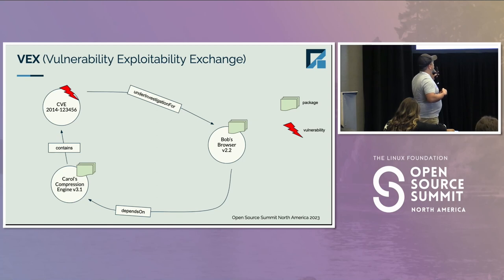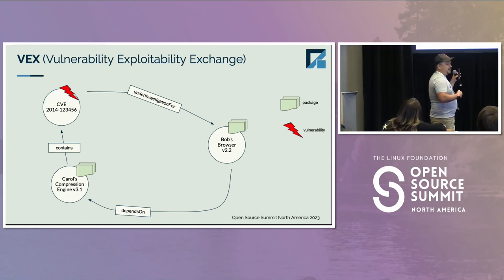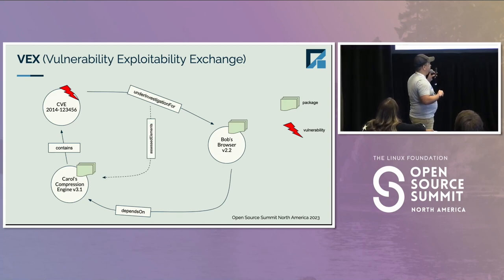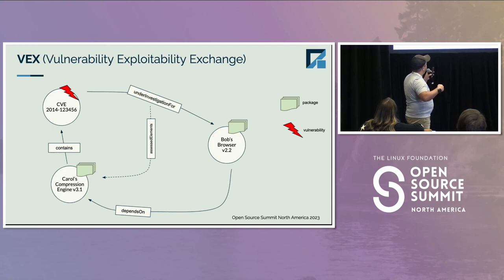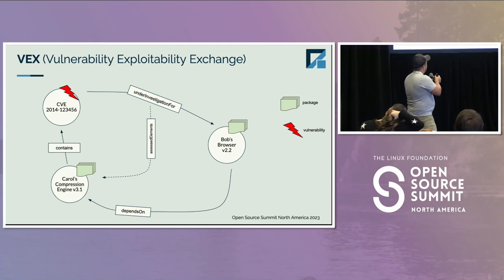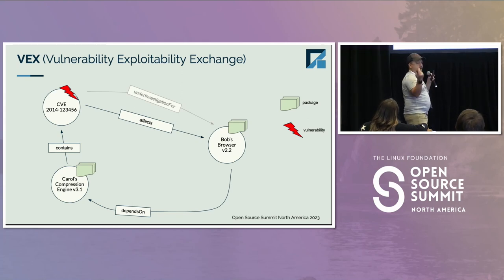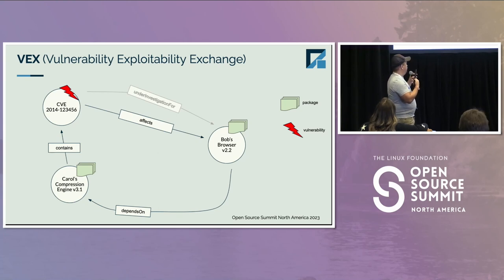Once the CVE hits and gets published, Bob starts looking into it, and the first thing he should do is inform people that he's looking at this vulnerability and how it affects his software. The 'under investigation' relationship has a field where you can say: I'm looking at this CVE in my browser, assessed through the fact that I know it's contained in Carl's compression engine V31. Then Bob will determine he is affected, sends the affected message on the wire, and people can react to it. Because all of this is machine readable, you can enact policy — this is your starting message that you should start acting.